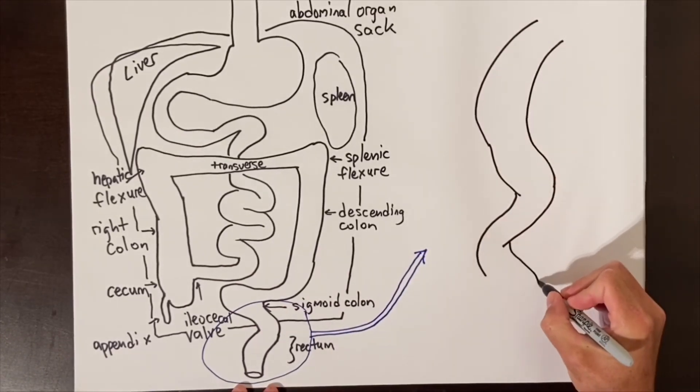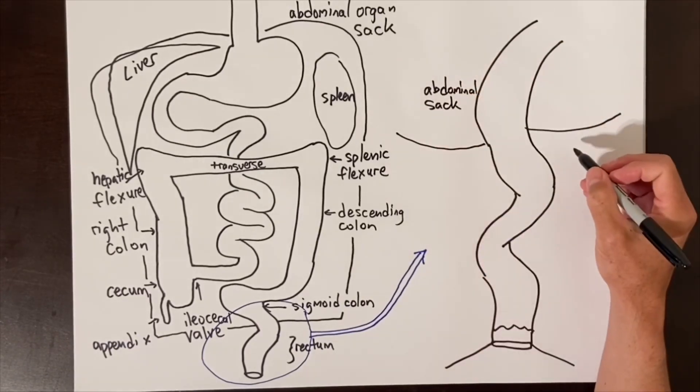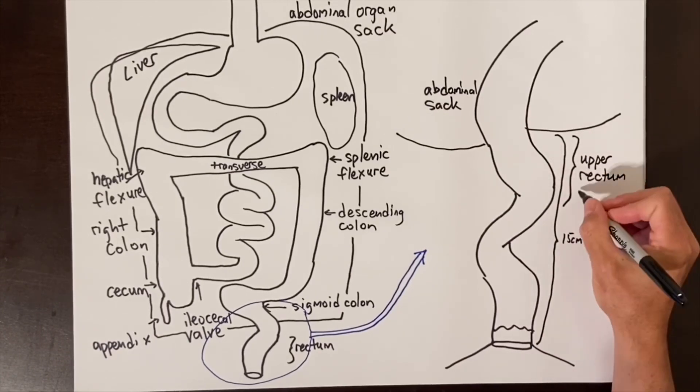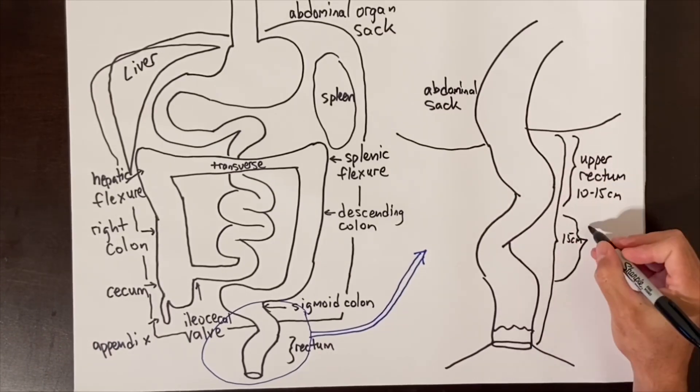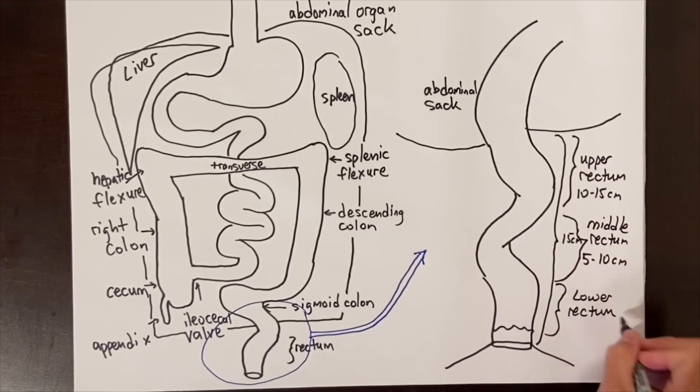The rectum is usually about 12 to 15 centimeters long, and it varies based on body size. For surgical purposes, we essentially break the rectum down into an upper rectum, which is 10 to 15 centimeters from the anus measuring up from below, the middle rectum, which is 5 to 10 centimeters from the anal opening, and the lower rectum, which is the lowest area of rectum just above the anus. Again, this varies from person to person.